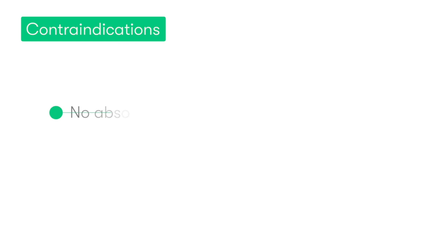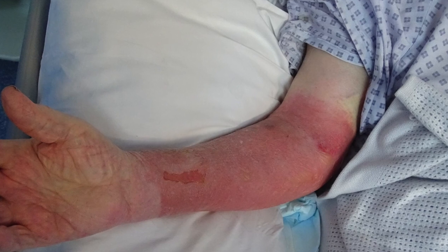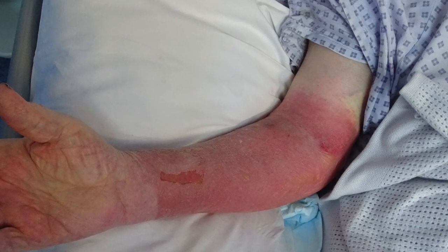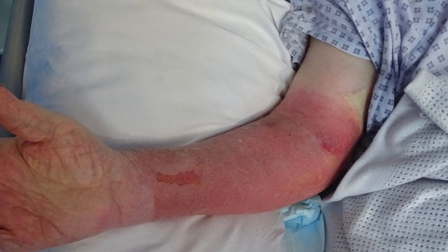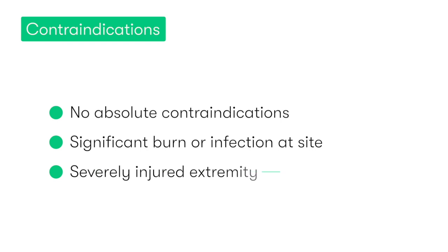Whilst there are no specific absolute contraindications to venous cannulation, there are several relative contraindications. These include the patient having a significant burn or infection at the proposed site of cannula insertion, or if the extremity is severely injured.